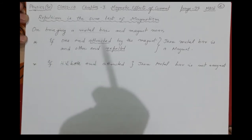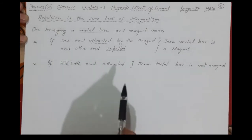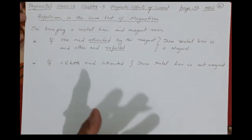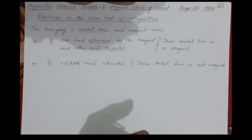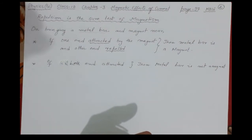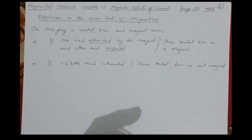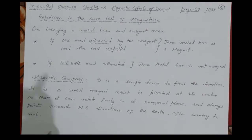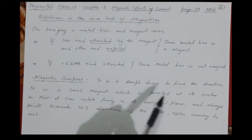The bar being tested will not have its own north and south, which is why it does not show repulsion against the known magnet. This is how you understand that repulsion is the surest test — attraction alone cannot tell you that something is a magnet.